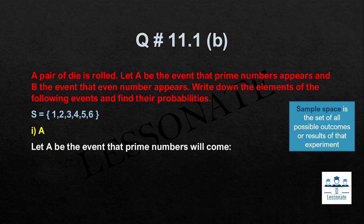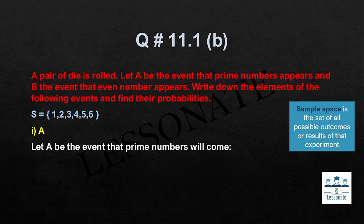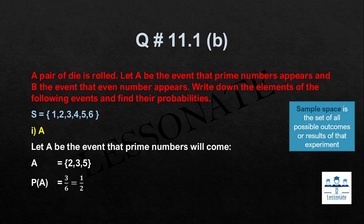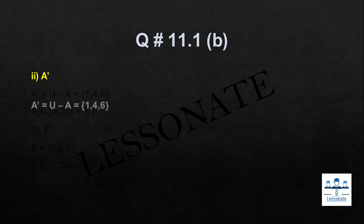Let A be the event that a prime number appears. Prime numbers in the sample space are 2, 3, and 5 — these three digits are prime numbers. So A = {2, 3, 5}. When we find the probability, there are 3 elements out of 6, so P(A) = 3/6, which becomes 1/2. Next, A complement means the universal set minus our values. Removing 2, 3, and 5 from {1,2,3,4,5,6}, the remaining elements are 1, 4, and 6, giving 3 elements, so P(A') = 3/6 = 1/2.